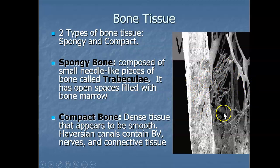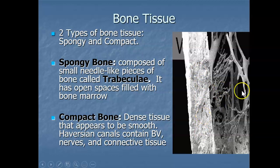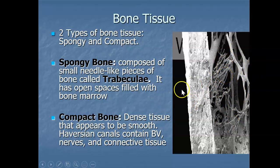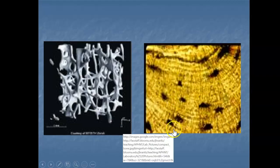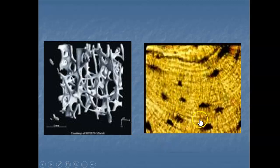There are two types of bone tissue: spongy bone and compact bone. Compact bone is very thick, hard, and dense — though not completely solid. Spongy bone is a network of needle-like structures called trabeculae, and this is where red bone marrow sits in between those trabeculae. Yellow bone marrow would be found within the medullary cavity of the compact bone.